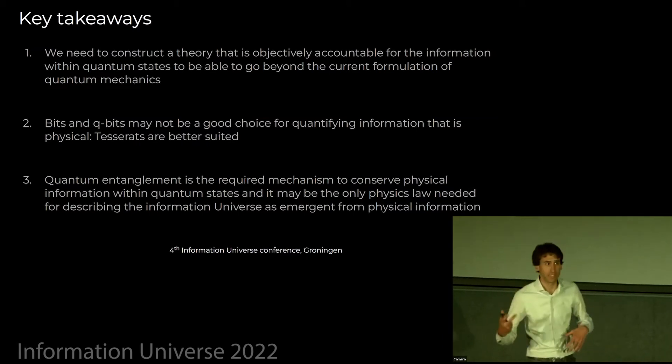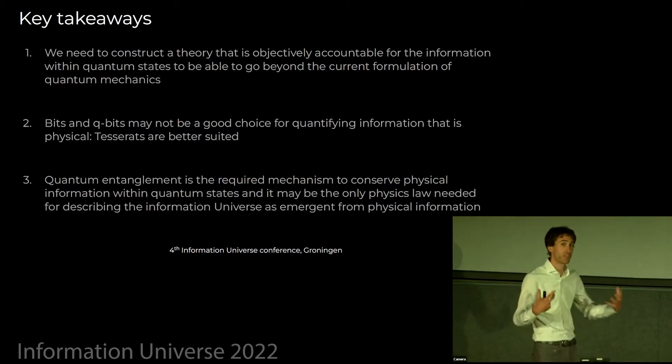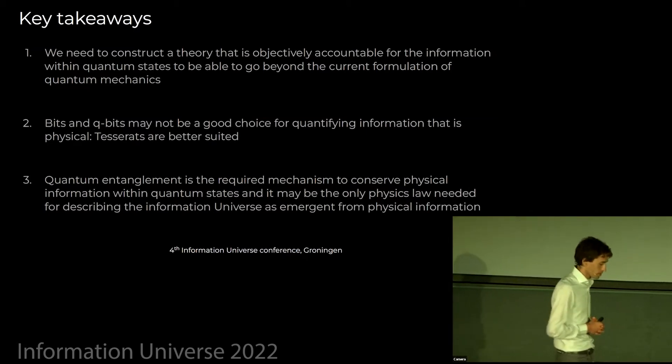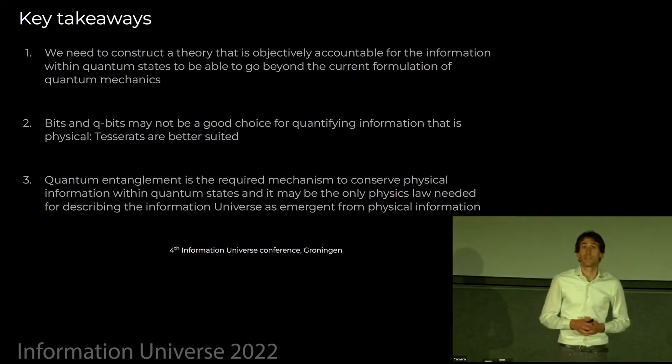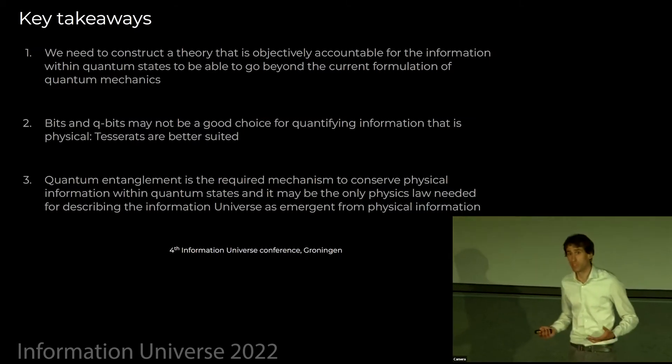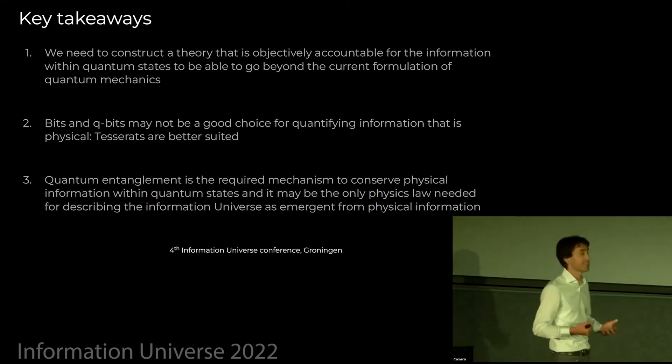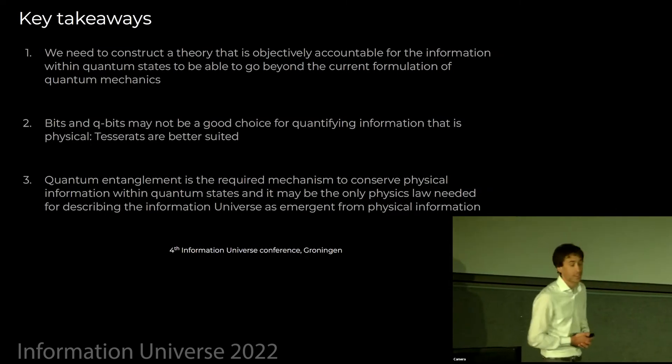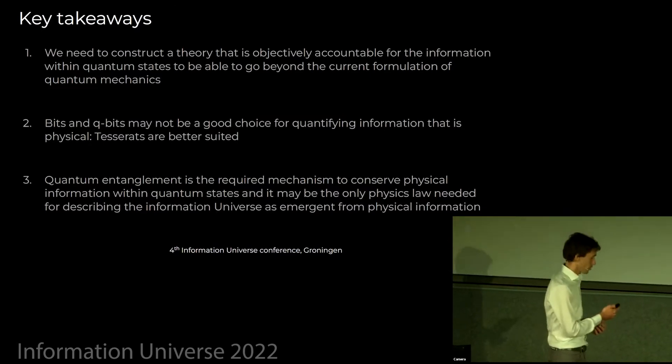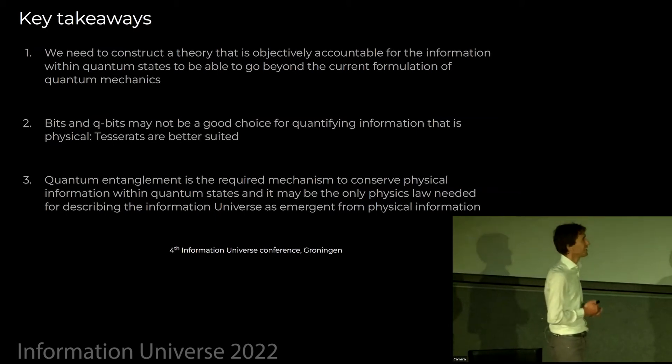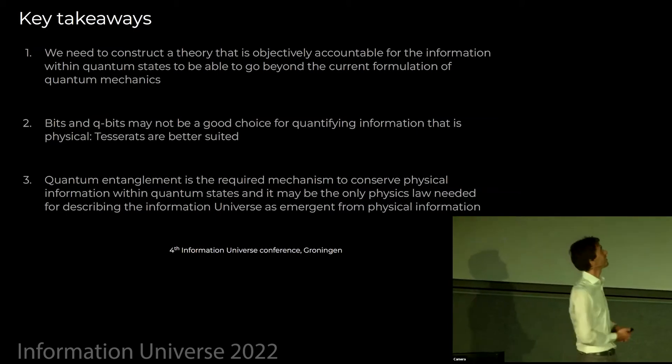From the definition of tesserats as physical information, connecting the mathematical part of information and some physical entity that we will introduce today, I will show some consequences. In particular, you need a mechanism to conserve this information that really looks a lot like a microscopic mechanism of entanglement. I would even argue that this is the only thing we need to have emerging physics.